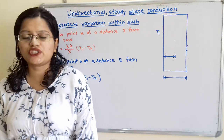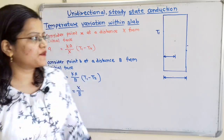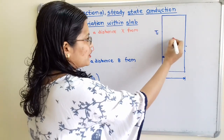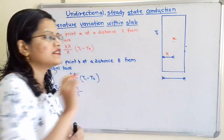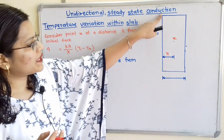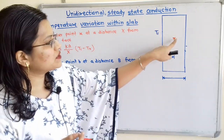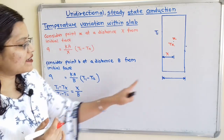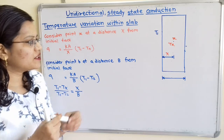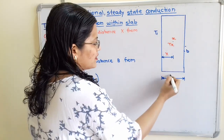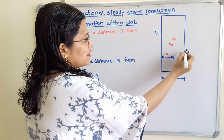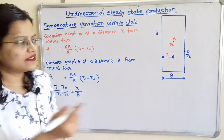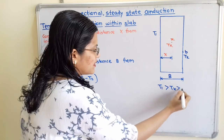To understand the temperature variation within the slab, we consider two points. Point X is at a distance capital X from the initial face, where the temperature is TX. Point B is at a distance capital B from the initial face, where the temperature is T2. So we have T1 greater than TX greater than T2.